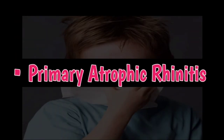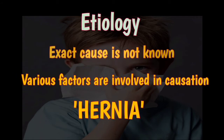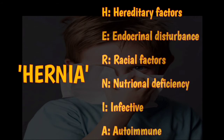There are two types of atrophic rhinitis: primary atrophic rhinitis and secondary atrophic rhinitis. The exact etiology behind primary atrophic rhinitis is not known; however, various factors are involved in its causation. For remembering these factors, we have a mnemonic called HERNIA. In the word HERNIA, H is for hereditary factors, E is for endocrine disturbance, R is for racial factors, N is for nutritional deficiency, I for infection, and A for autoimmune process.